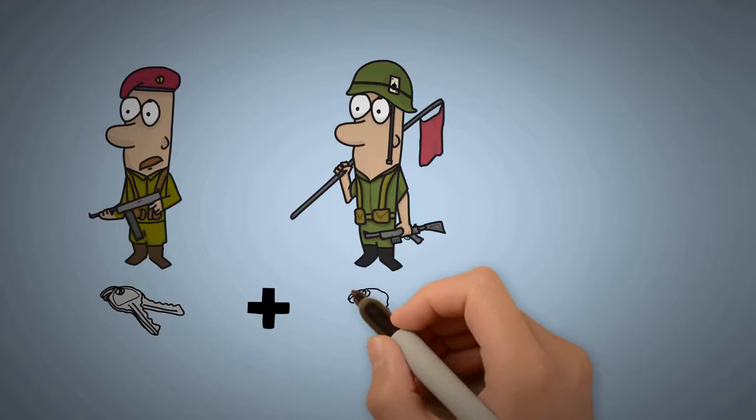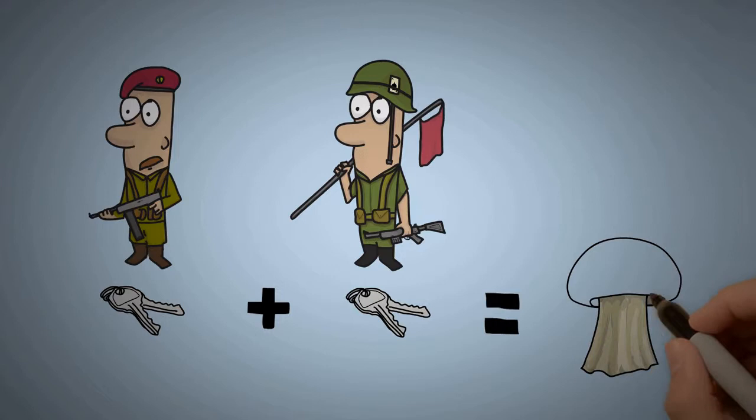This co-dependency between the two keys means Commander Alice and Commander Bob must both enter the launch keys at the same time to arm and launch the nation's nuclear arsenal.